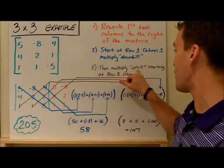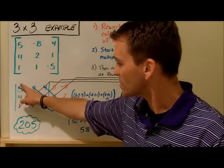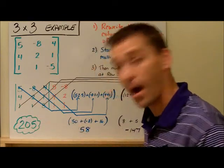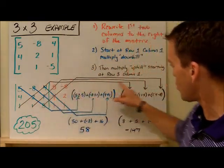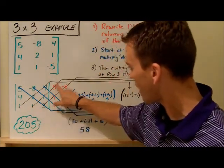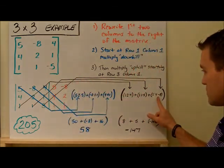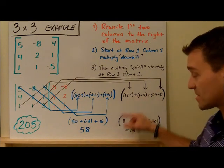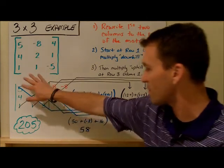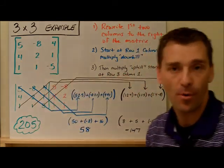Then we go to step three. I must multiply uphill by starting at row three, column one — just like a two by two where the second round starts at the bottom left and multiplies uphill. So one times two times four gives the first uphill result. Then one times one times five. Then five times four times negative eight. The stuff in blue is grouped together as the downhill multiplication, and the stuff in black is all grouped together as the uphill multiplication.